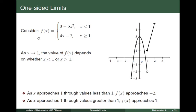Let us consider this function, given by a piecewise function. f(x) is equal to 3 minus 5x squared if x is less than 1, and f(x) is equal to 4x minus 3 if x is greater than or equal to 1. Note that 3 minus 5x squared is parabolic, while 4x minus 3 is linear. The graph of the function f is given by the figure on the right side of the slide.